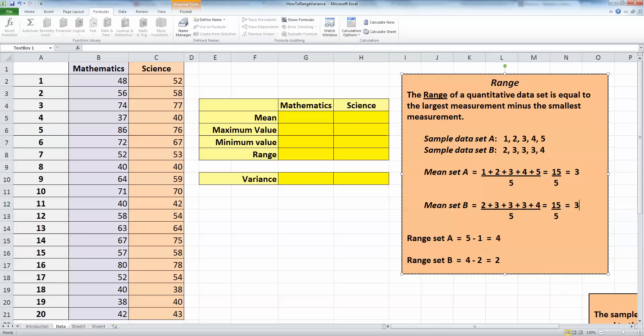So very quickly then, in these two sets of data up here, in my sample data, the range of variability is much greater in set A than it is in data set B.